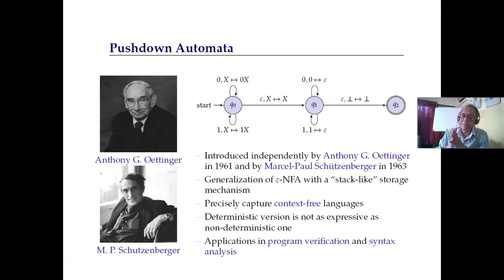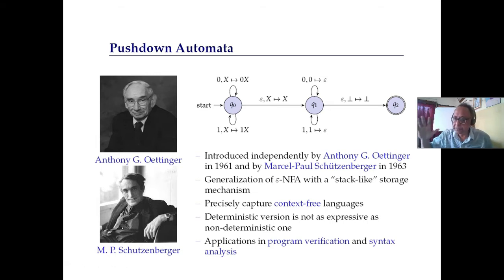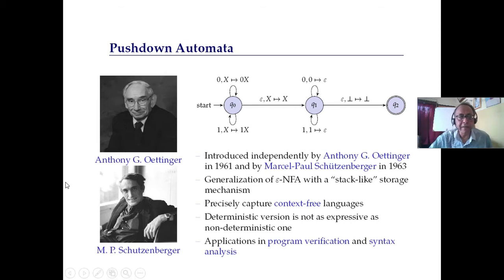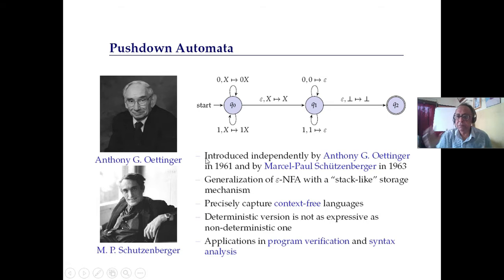The concept of context-free language was fully developed by Noam Chomsky, and the machine was developed by Anthony Oettinger and Schutzenberger — both scientists. The concept was developed around 1961-63, but by 1961 it was already cleared by Noam Chomsky.